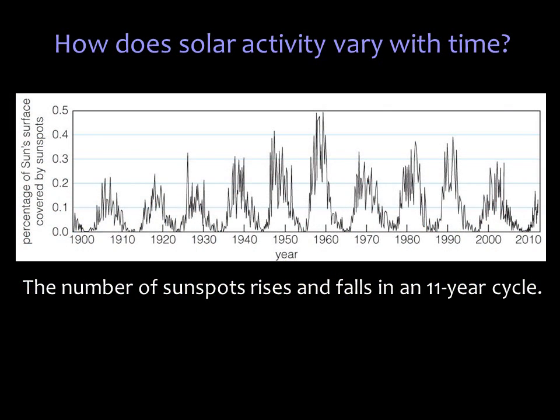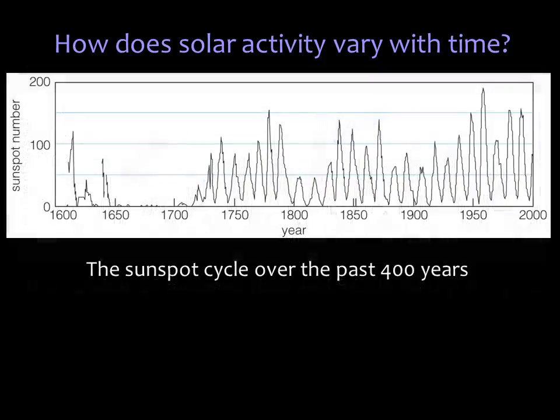Solar activity does vary with time. For example, the number of sunspots on the sun gradually rises and falls over an approximate 11-year cycle. The sunspot cycle can differ each time — sometimes there are lots of spots, sometimes there are fewer. At each solar maximum, the sun's entire magnetic field starts to flip, turning magnetic north into magnetic south and vice versa. This graph reconstructs the sunspot cycle over the past 400 years, and longer-term observations hint that the sunspot cycle can change more dramatically.